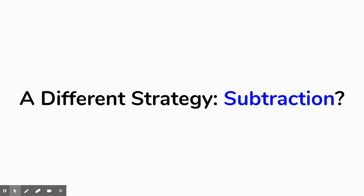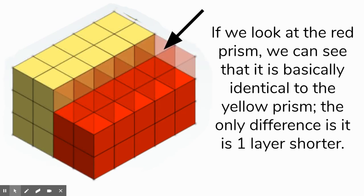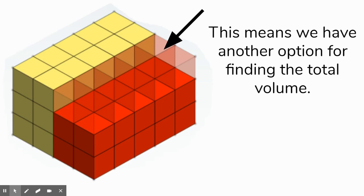We're going to use the problem we just did earlier with the yellow and the red prism. If you look at the red prism, you can see that it's basically identical to the yellow prism — the only difference is that it's one layer shorter. It's almost like if that layer were there, it would be one giant prism. There's just that one piece that's missing. If we can pretend that part is there, we can use that as a subtraction strategy.